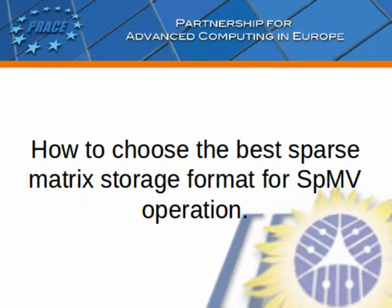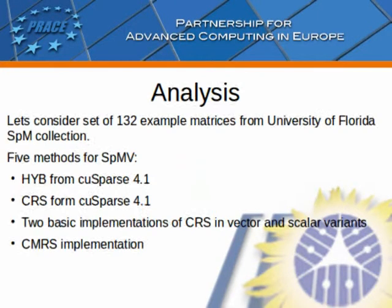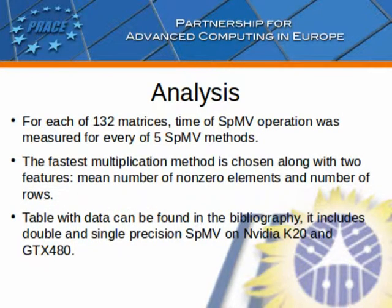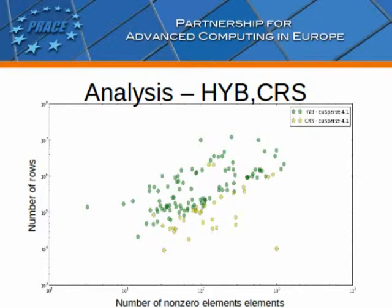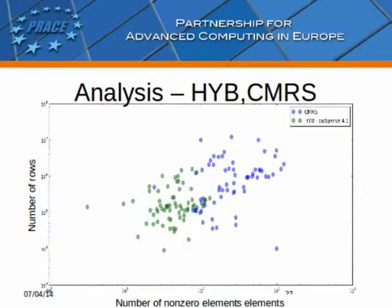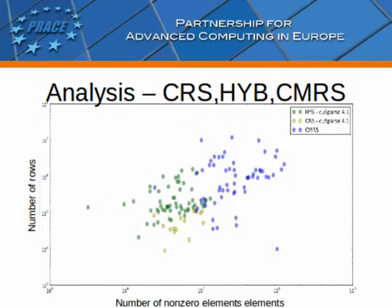How to choose the best sparse matrix storage format for SPMV operation? We consider a set of 132 example matrices from the University of Florida sparse matrix collection and five methods for SPMV. For each of the 132 matrices, the time of the SPMV operation was measured for every one of the five SPMV methods. The fastest multiplication method is chosen along with two features: mean number of non-zero elements and number of rows. We create a plot where the x-axis shows the number of non-zero elements and the y-axis displays the number of rows of the matrix. The color of points indicates the fastest sparse matrix multiplication method. As can be seen from the graph, the two parameters help us choose the best SPMV method for a particular matrix.